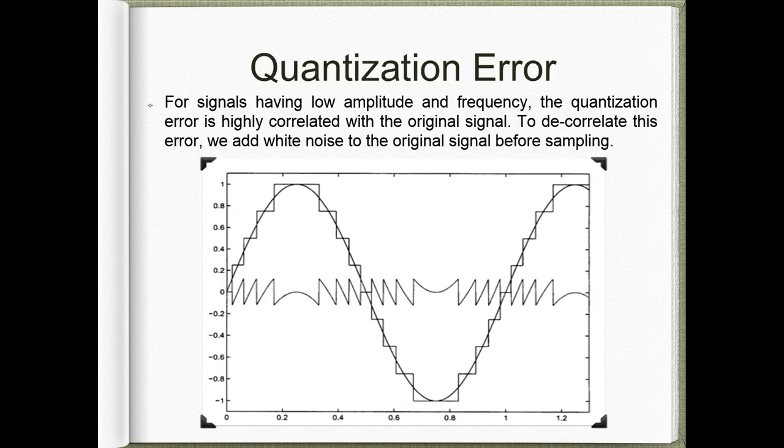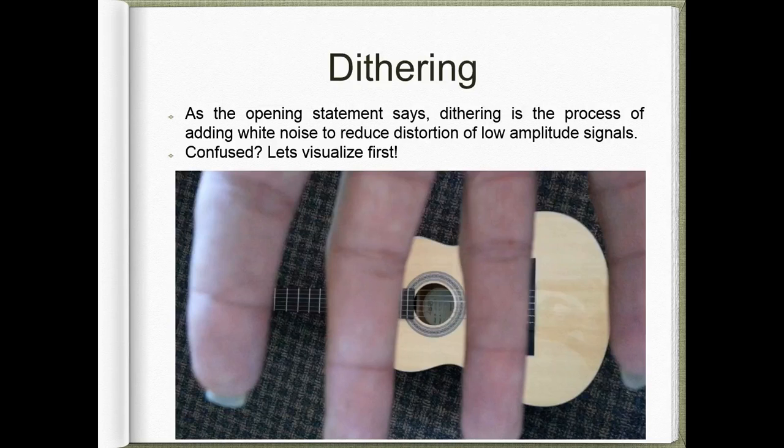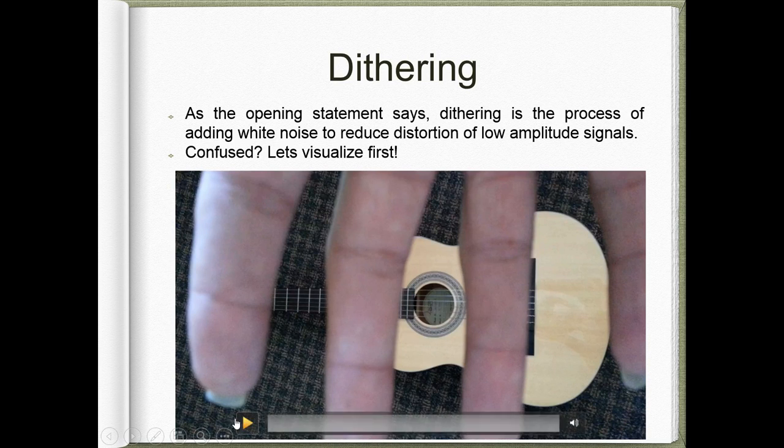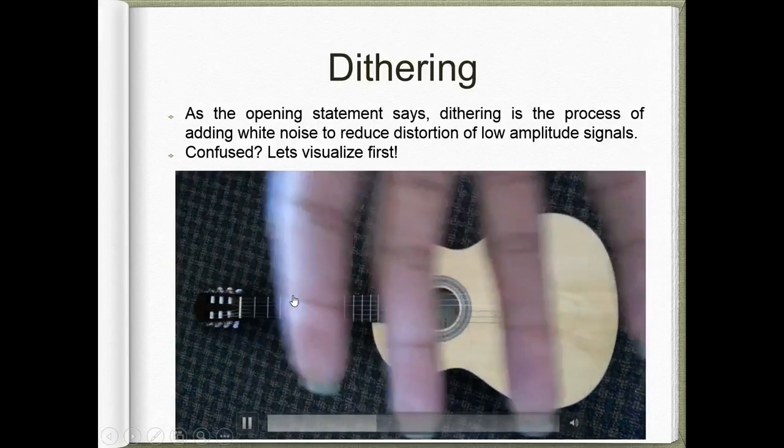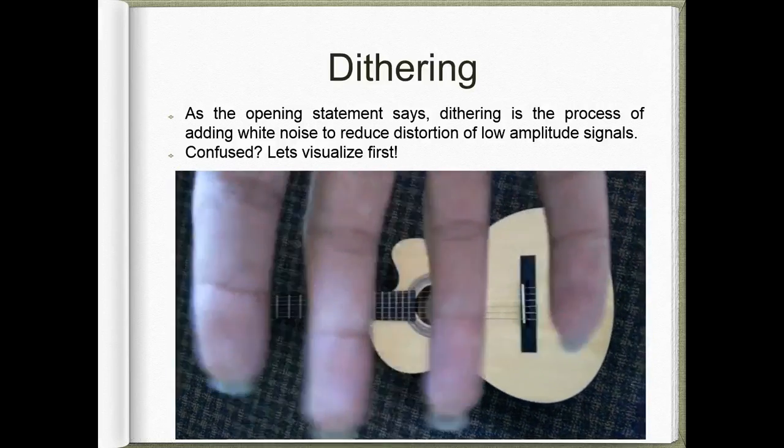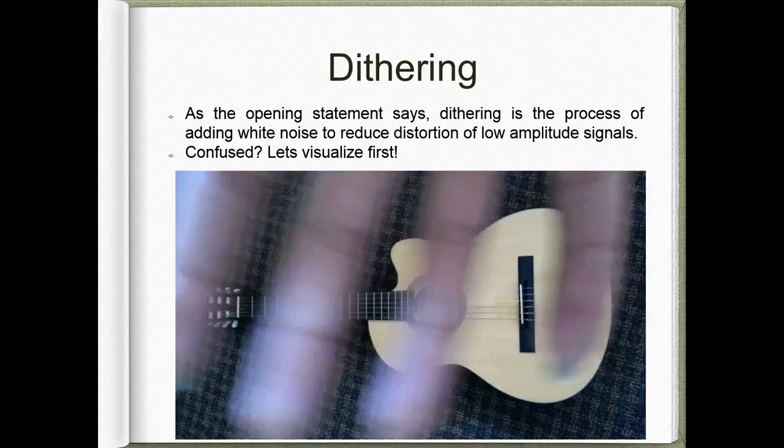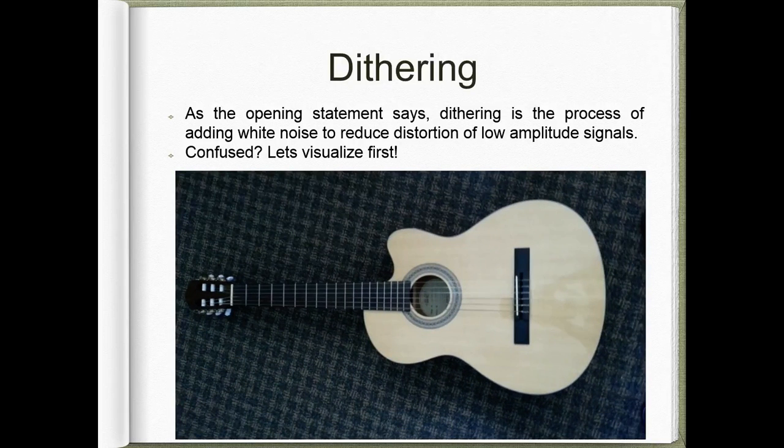Confused? Let's visualize it. First, spread your fingers in front of your eyes and try to see the object in front of you. You won't be able to see the entire object. Now, in the same position, try and shake your hand quickly and observe the same object. You will notice that you could see the object entirely, but with an effect of blurriness. This is what dithering is about.